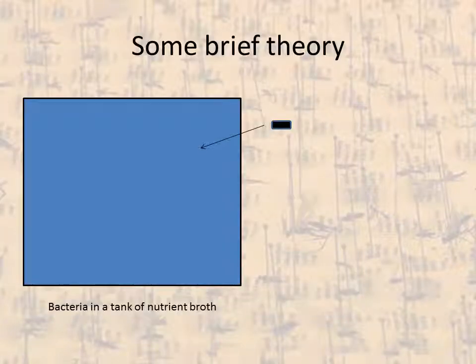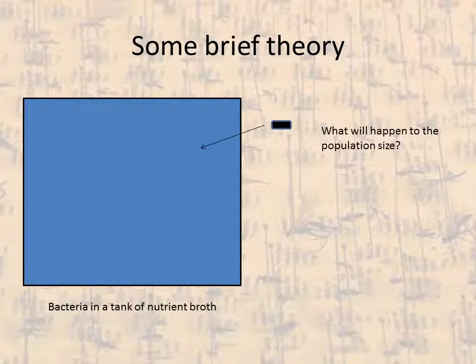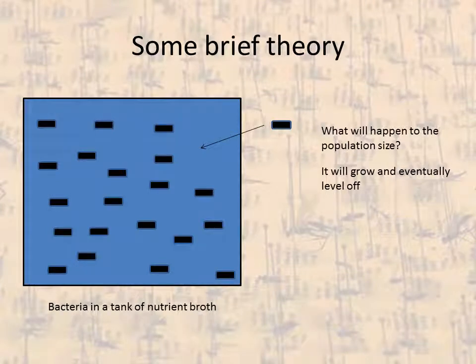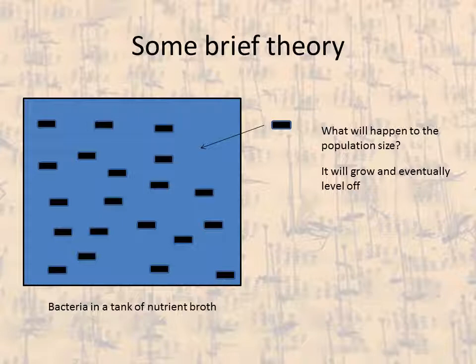If we want to understand why there are so many insect species, it's useful to do a little thought experiment. Consider a hypothetical tank of fluid with some nutrients, and we throw a hypothetical bacterium into it. The population is going to grow, and eventually it's going to stop growing because there aren't unlimited resources. So we're probably going to see the bacterial population grow and eventually level off — and then something else might happen to it after that.